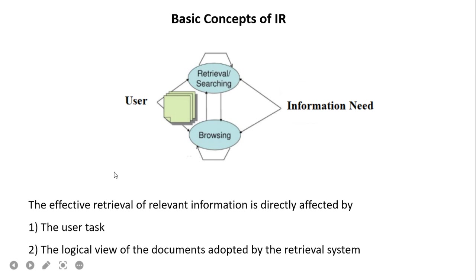In this diagram, the user and user's information need are shown, with the IR system in between. The user may do browsing or retrieval and searching. The effective retrieval of relevant information is directly affected by the user task and the logical view of the documents adopted by the retrieval system.